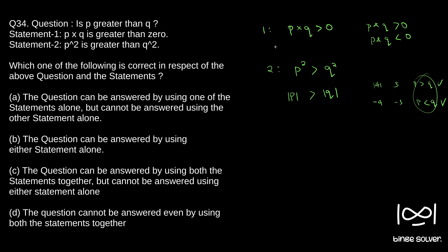So now the question is whether when both statements are true together, we can answer whether p is greater than q or not. From statement one, we know either both p and q are positive, or both are negative. From statement two, absolute value of p is greater than absolute value of q. But statement one does not tell us whether we are in the first scenario — both positive — or the second scenario — both negative.